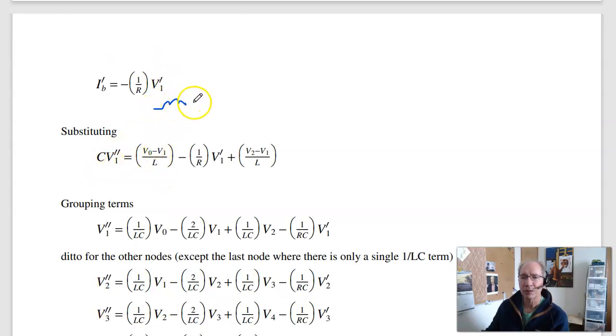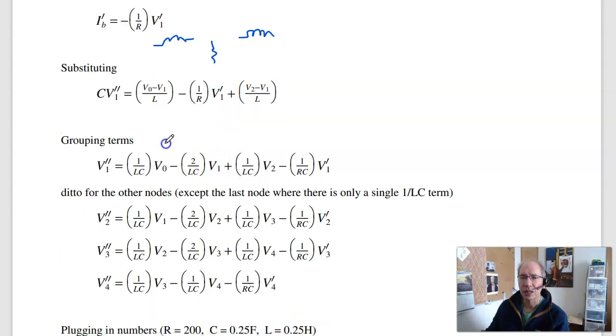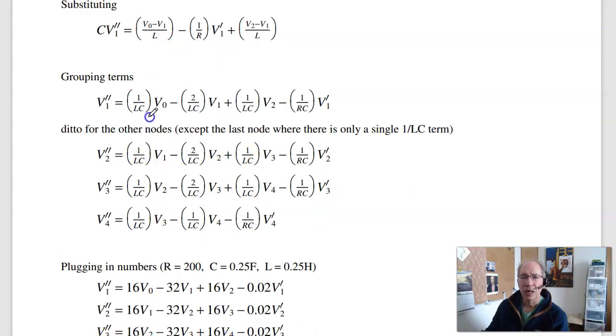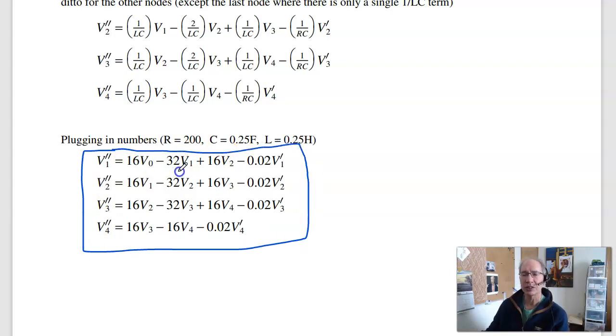Here's the current from the left, from the first inductor. Here's the current from the resistor. Current from the right, from the second inductor. Now group all the terms, and you'll have the same equation at node 2, node 3, and so on. The oddball is the last node because there is no inductor on the right, so I only have one term instead of 2 over LC. If you plug in numbers for this semester's homework, I'll get 16 minus 32, 16. So those are the coupled differential equations that describe a four-stage RLC circuit.